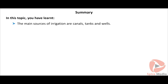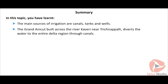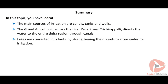In summary, the main sources of irrigation are canals, tanks, and wells. The Grand Anicut built across river Kaveri near Trichrappalli diverts water to the entire delta region. Lakes are converted into tanks by strengthening their bunds, and well irrigation utilizes groundwater.